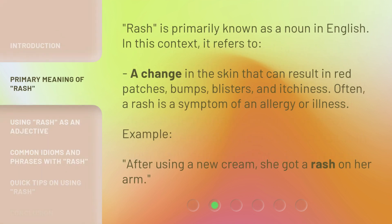Rash is primarily known as a noun in English. In this context, it refers to a change in the skin that can result in red patches, bumps, blisters, and itchiness. Often, a rash is a symptom of an allergy or illness. Example: after using a new cream, she got a rash on her arm.